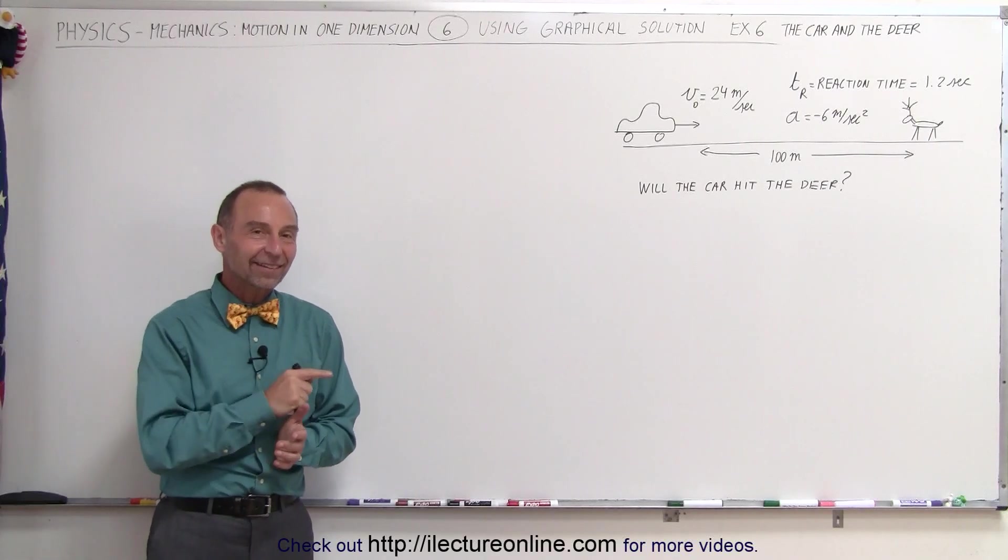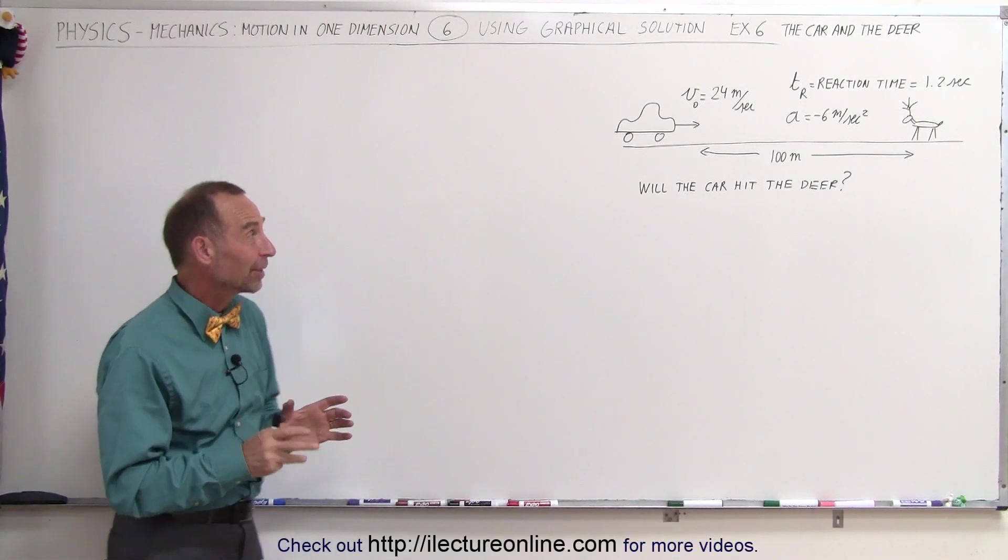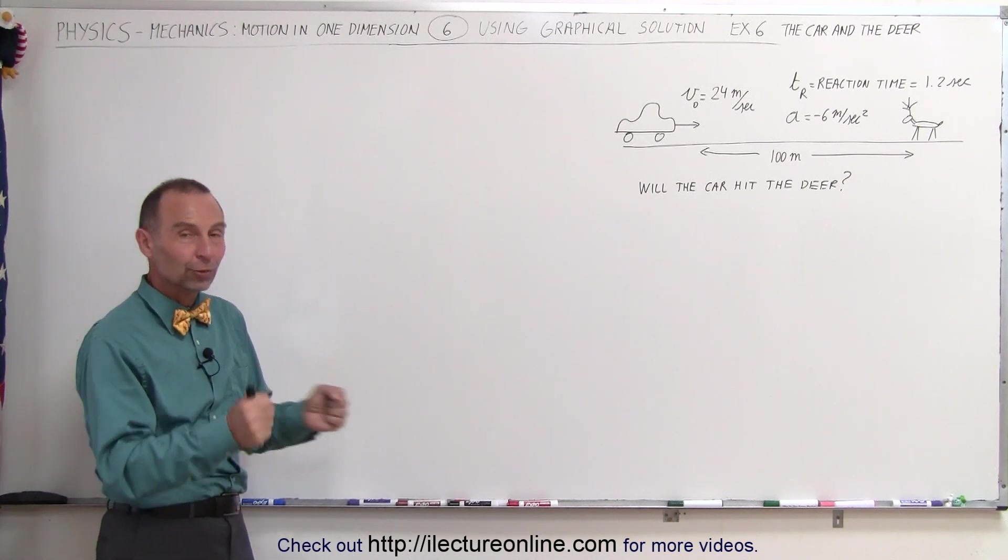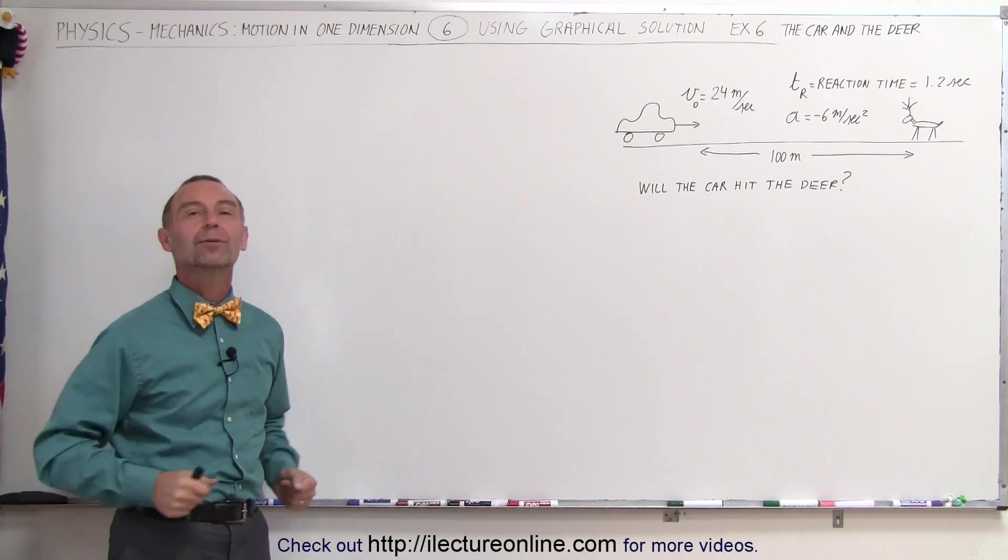Welcome to iLectra Online. Our next example is a classic example. Here's a car driving down the highway at 24 meters per second. It goes around a corner and suddenly sees a deer 100 meters away.